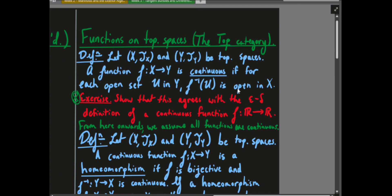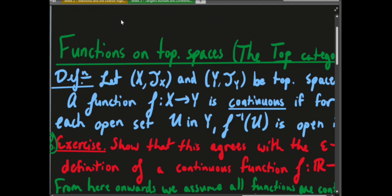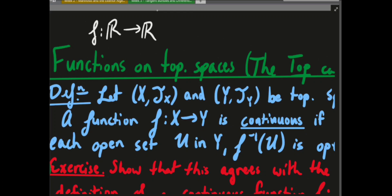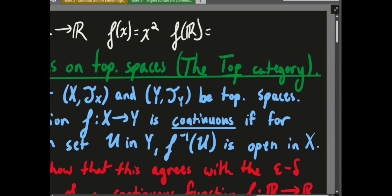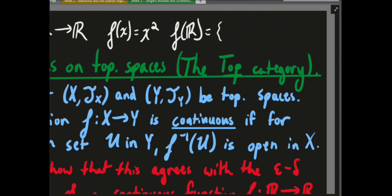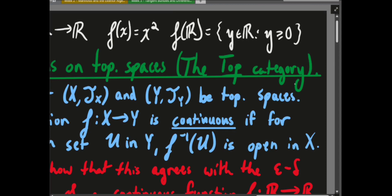For example, take F mapping from R to R given by F(x) = x². If I map all of R through F forward, I get every point reachable by squaring a number — that's the non-negative reals, {y in R : y ≥ 0}. That's the range of the parabola.